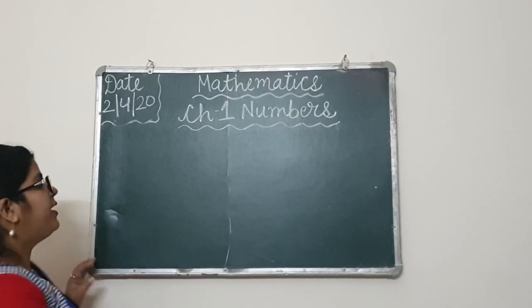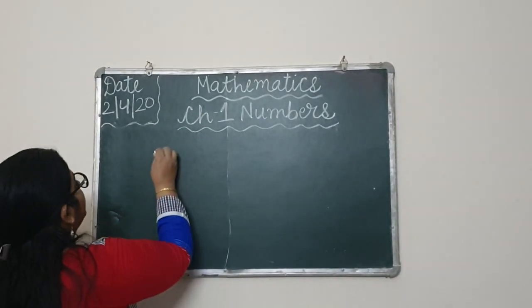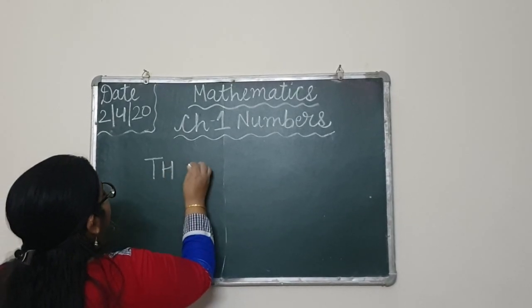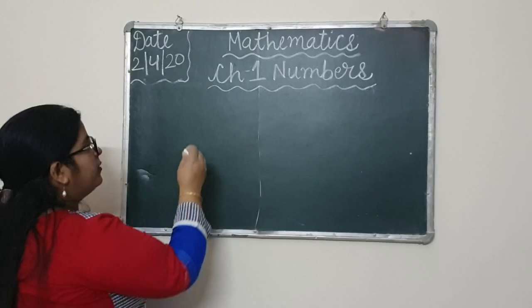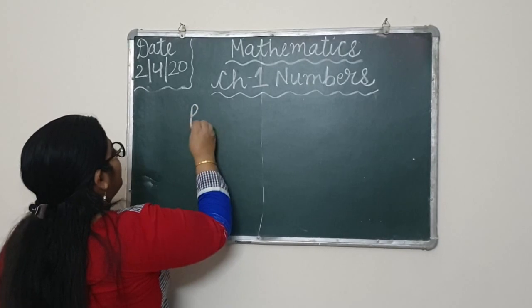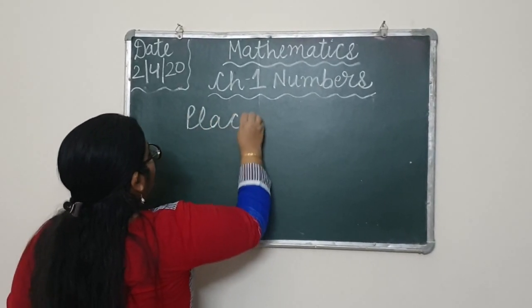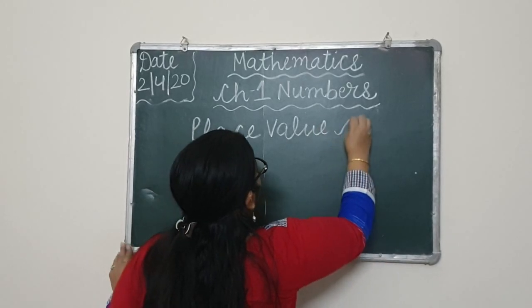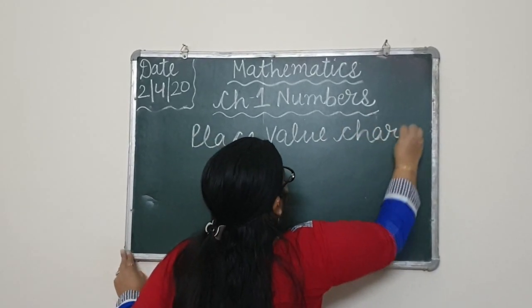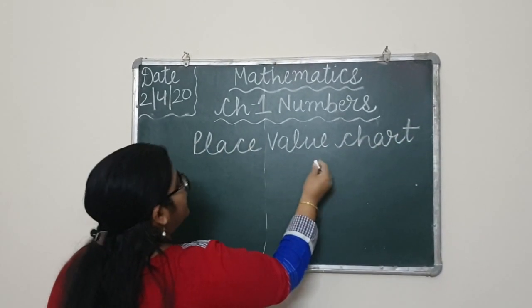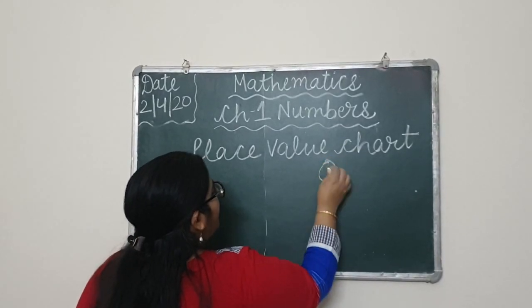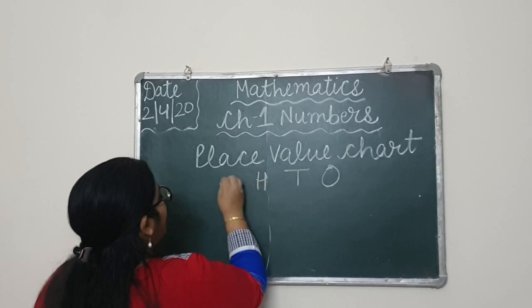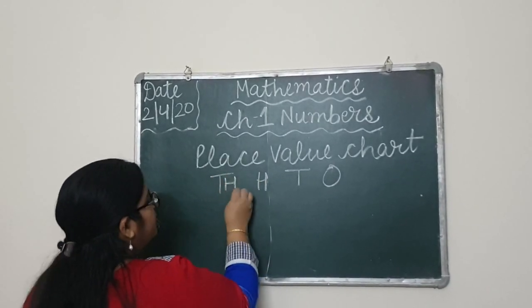Place value chart. In the place value chart we have 1s, 10s, 100s, and TH for thousands.